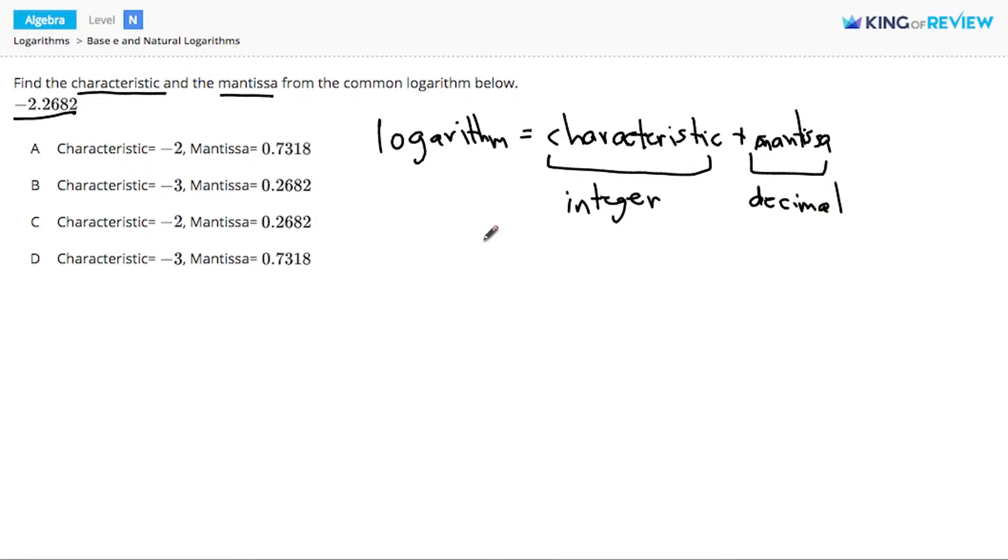If we plug in negative 2.2682 for our logarithm, we need to write this as an integer plus some decimal. Since it's negative, we could write it as negative 2 minus 0.2682, splitting this logarithm into its integer and decimal components. But this won't work because we want a sum.